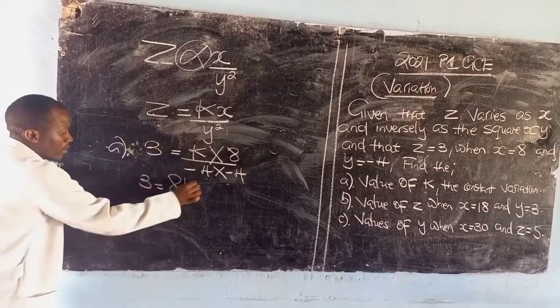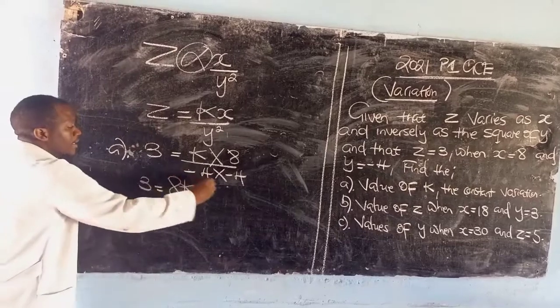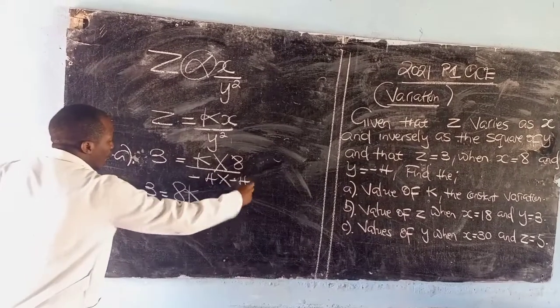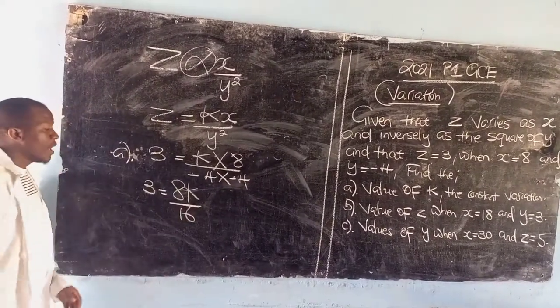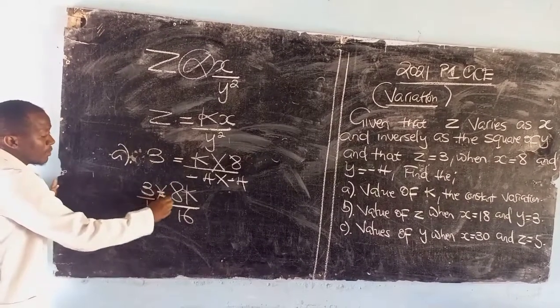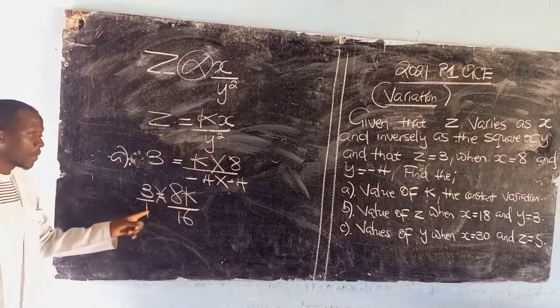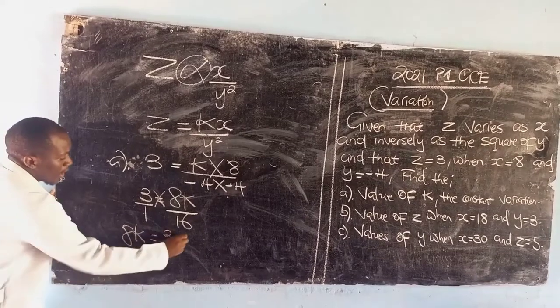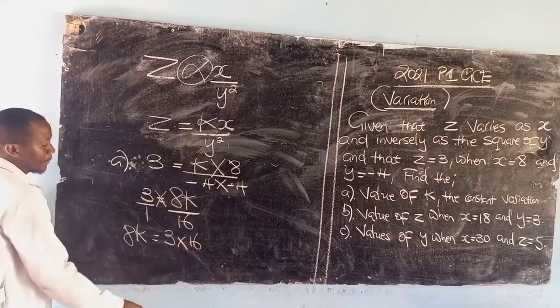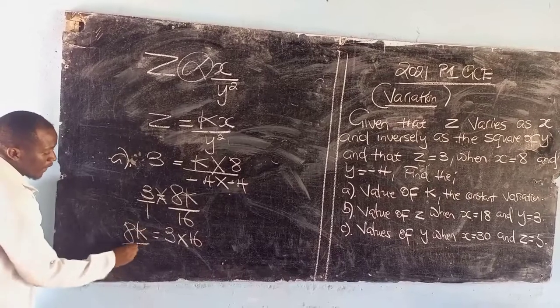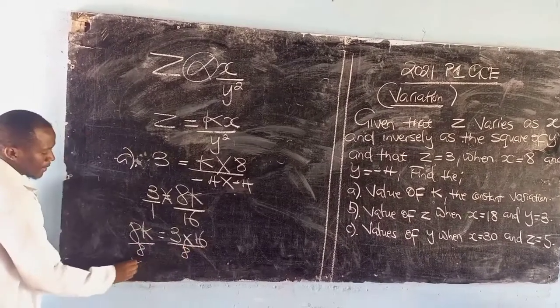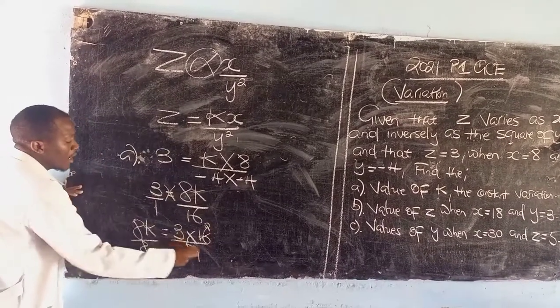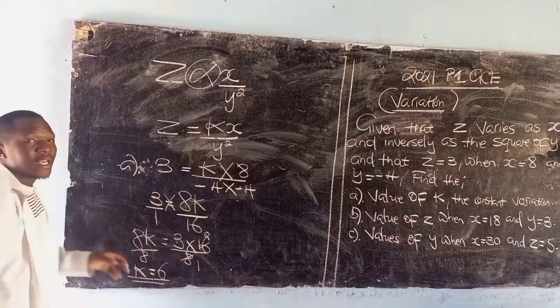So z is 3, then we are going to replace k multiplied by the value of x is 8, and y is negative 4 multiplied by negative 4. Then this is going to be 3 equals 8 multiplied by k is going to give us 8k. Then negative and negative are going to result in a positive, while we are going to say 4 multiplied by 4 is going to give us 16. Then we can now cross multiply. We are going to say 8k multiplied by 1 is 8k equals 3 times 16. Then divide by 8, so k equals 3 times 2. So our value for k is 6.